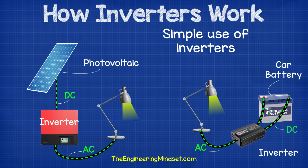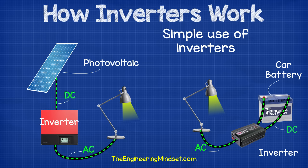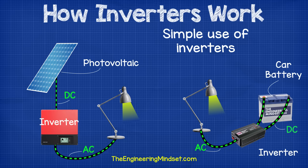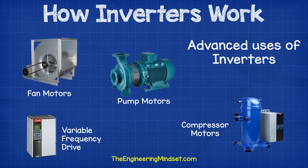So where are inverters used? A common and fairly simple application is within solar panels or photovoltaic arrays, as these generate DC power. But the appliances in your home use AC power, so this needs to be converted for it to be of any use. You can also buy portable inverters for your car, which allow you to use the car's battery to power small household appliances.